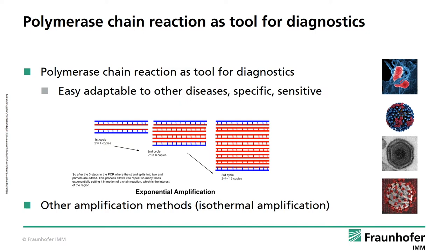We believe that the polymerase chain reaction is the tool to enable a fast, reliable, specific, and sensitive diagnosis of disease. A further advantage is the ability for fast adaptation of the method to new diseases. Further amplification methods are also available, for example isothermal amplification, which may also be used on our systems.